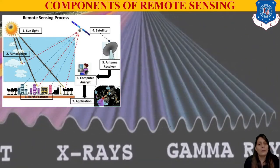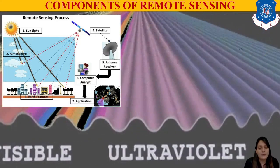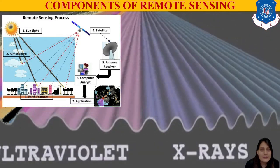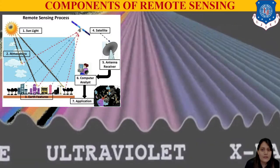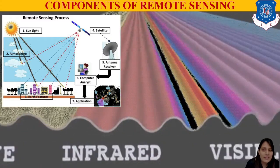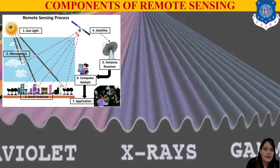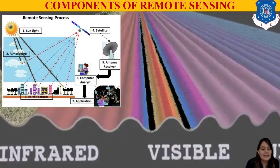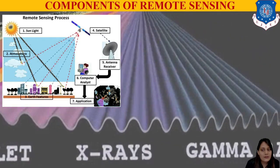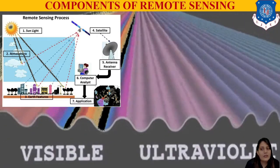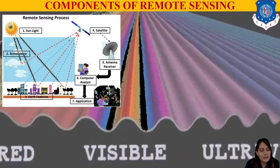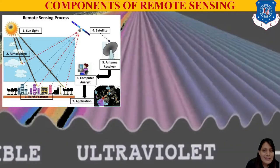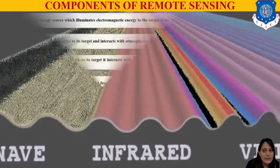Another very important topic is the components of remote sensing — what they are and why they matter. There are seven components of remote sensing you must remember. These are: sunlight, atmosphere, earth feature, satellite, antenna/receiver, computer analyst, and application. Let's look at the technical details of each.